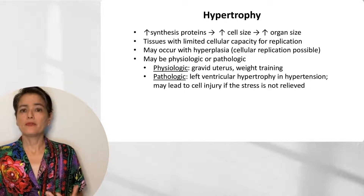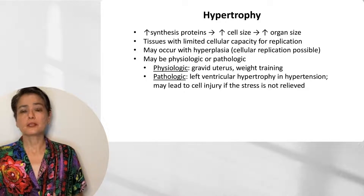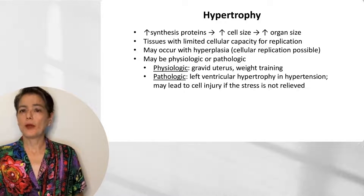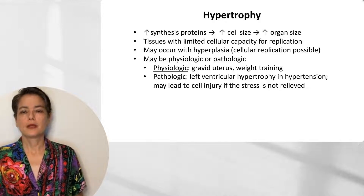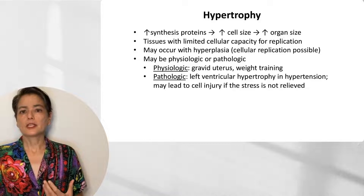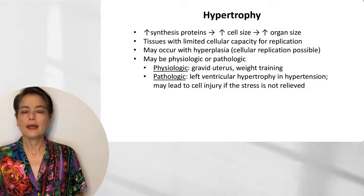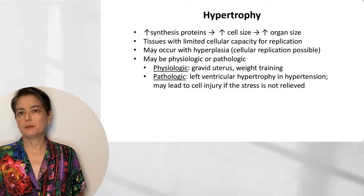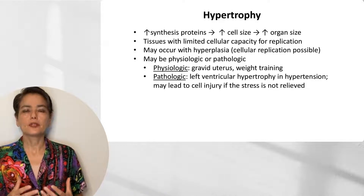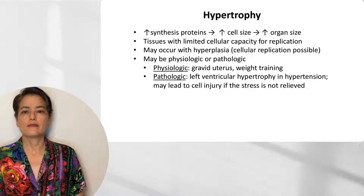Hypertrophy may be physiological or pathologic. Physiologic examples include the gravid uterus or the skeletal muscle in weight training in response to increased resistance. Pathologic hypertrophy is classically exemplified by left ventricular hypertrophy in hypertension. And importantly, hypertrophy may lead to cell injury if the stress is not relieved.